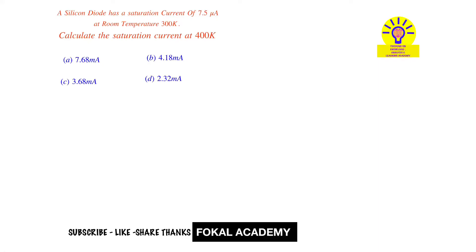In this problem, for a silicon diode saturation current of 7.5 microamperes at room temperature 300 Kelvin is given. Calculate the saturation current at 400 Kelvin.